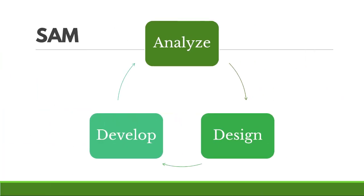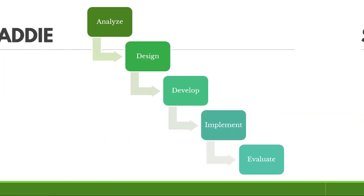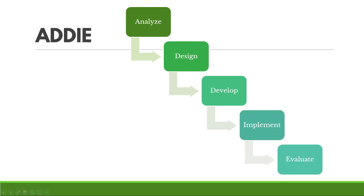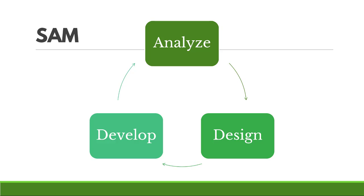In contrast, we have SAM, which is all about rapid prototyping. You do a quick analysis, a quick design, a quick develop, and then rinse and repeat. Rather than potentially wasting a lot of time up front with ADDIE and realizing down the line it isn't going to work, you dive right into prototyping, try to build something, see if it works, keep what you like, maybe start fresh, and try again. You can see how these are very different models.